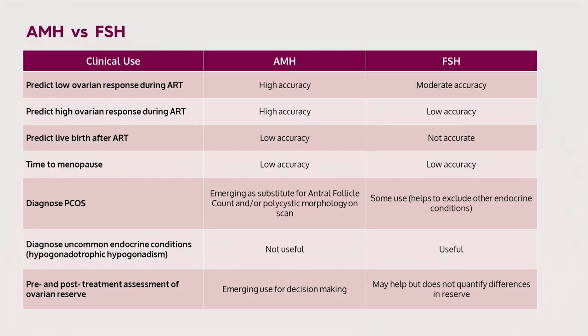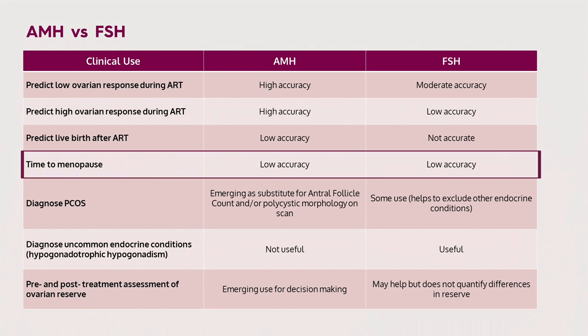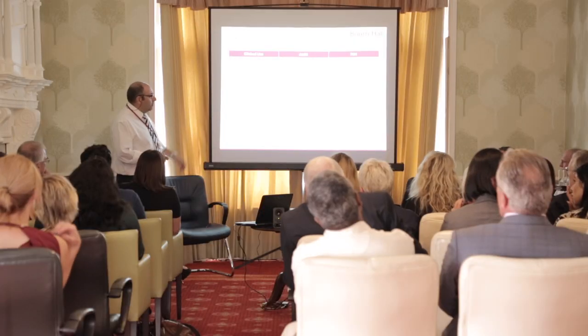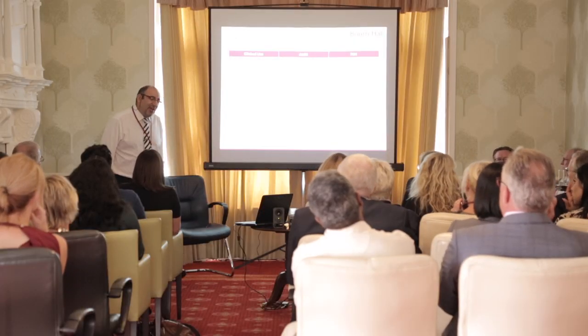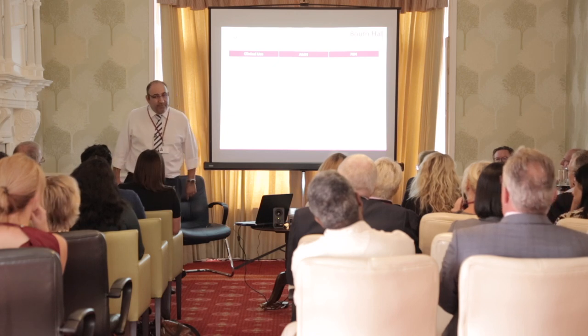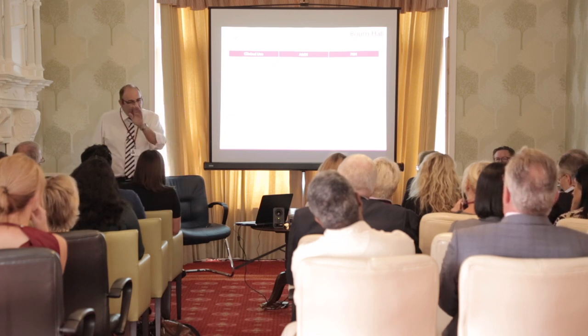There are other uses for both tests, including predicting time to the menopause. Notoriously, many of us tend to use FSH — if it's slightly out of range or rising, we think this woman is getting there. However, nobody can really say when menopause will truly come, because FSH has low accuracy for that, and AMH is not that much better. There is a lot of enthusiasm for AMH, but we're still not there.